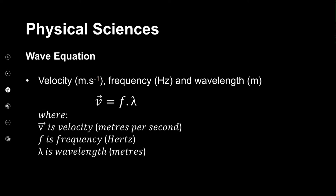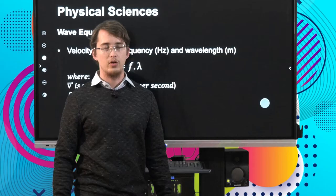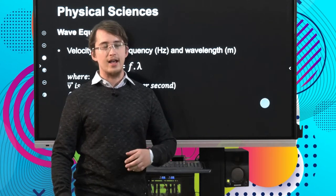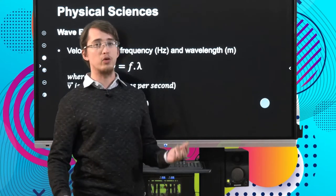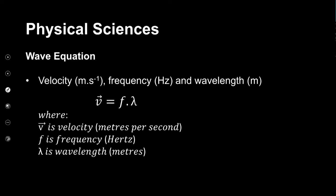In our understanding of waves we've already looked at the wave equation. We already know that the wave equation is a means to calculate the velocity of a wave when we have its frequency. In the wave equation, we are able to calculate the velocity of a wave by taking the product of that wave's frequency and its wavelength. You should already know that the frequency of a wave is the number of times the wave passes a particular point per second.